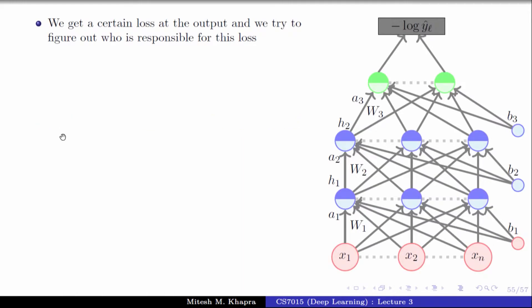So let's continue with this intuitive explanation. What is happening here is we have a deep and wide network and we get certain loss at the output, and we try to figure out who is responsible for this loss. We go and ask the loss: you are producing a non-zero value — what is wrong with you? So we go and talk to the output layer, because the loss depends on the output layer. If there was a loss, the output was not correct, so we ask the output layer why it is not producing the desired output.